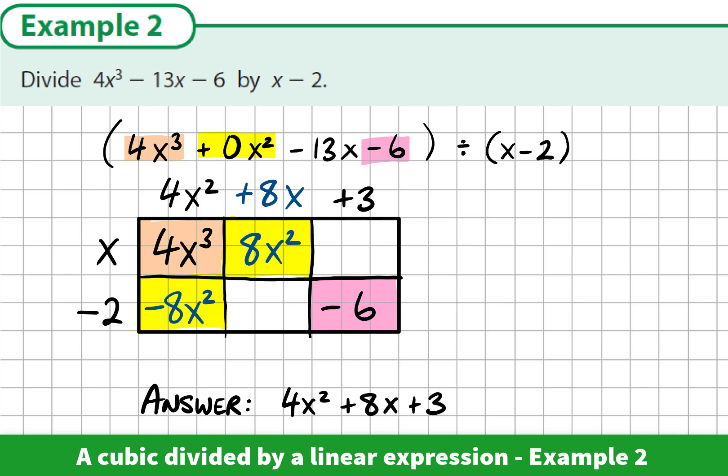We can also check our answer. We know that the last two boxes must add up to negative 13x. So the sum of the x's in these two green boxes must be negative 13x. Let's multiply and see if that's true. Negative 2 by 8x is negative 16x. x by 3 is 3x. When we add 3x and take away 16x, we see that we get negative 13x. So we're correct.